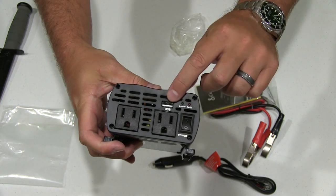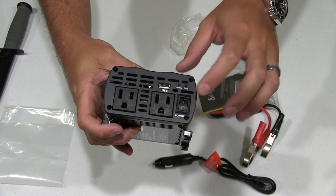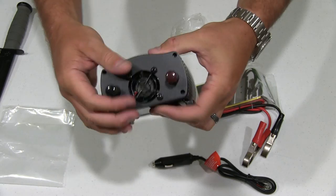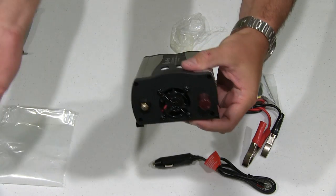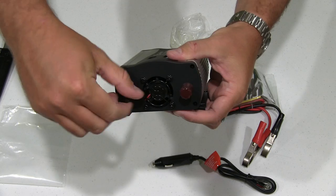So you see you got USB if you want to charge USB cell phone, etc., power on and off, two AC ports. And on the back side, you've got a negative and positive lead. Obviously, just screw it off and put your cables in.